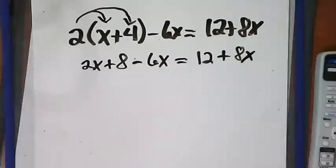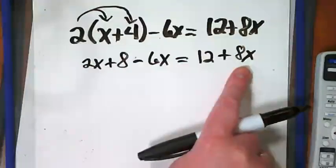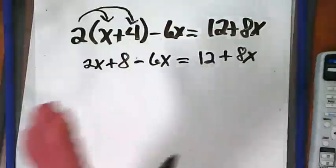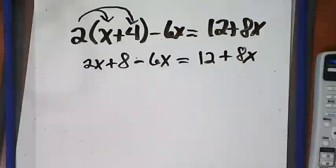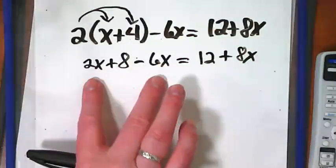Now we need to combine what? The like terms. Here's a like term with this and with this, and the 12 and the 8 are like terms. The first thing we want to do is if they're together on one side of the equal sign, we want to combine them there first. And I'm seeing these two on this side of the equal sign.